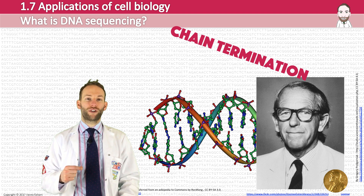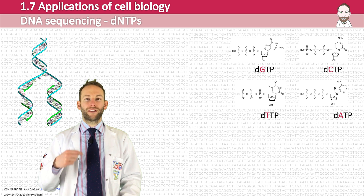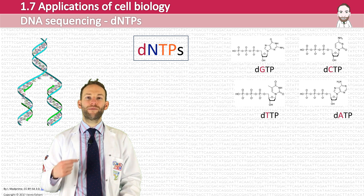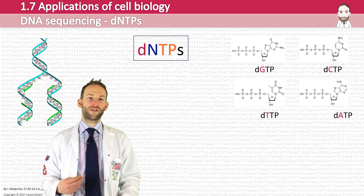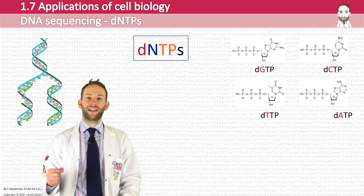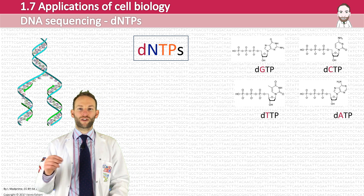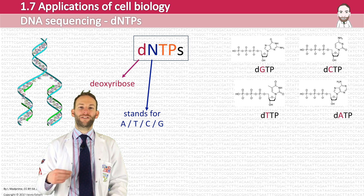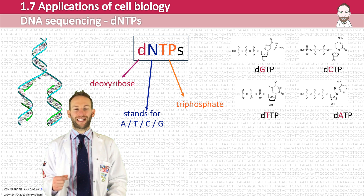Firstly, we need to talk about the mononucleotides used during DNA replication. These are called DNTPs — they contain the bases and the sugar, but they actually have three phosphates attached. DNTP stands for deoxyribose, the N stands for the base (A, T, C, or G), and TP stands for triphosphate because there are three phosphates.